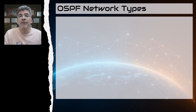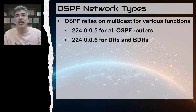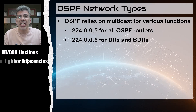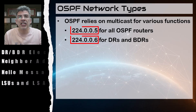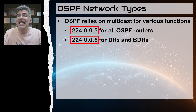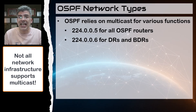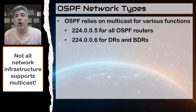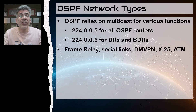OSPF relies on multicast for various functions that are critical to its operation. This includes DR/BDR elections, neighbor adjacencies, sending update messages, and so on. OSPF uses specific multicast addresses primarily for the initial establishment of adjacencies and for further operation. However, not all network infrastructures support multicast, so OSPF must be configured to adjust the way it operates in order to function correctly on such topologies.